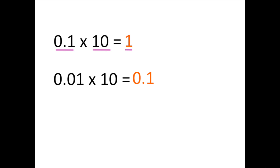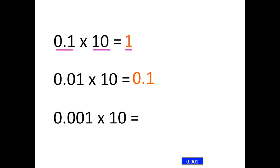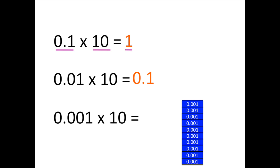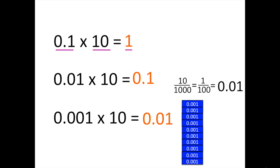Let's look at one last problem: 1 thousandth times 10, and again we'll look at a visual representation. I'm going to show you 10 one-thousandths. If we write that as a fraction and add them all up, we have 10 one-thousandths. We can simplify that to 1 hundredth, which we can write as a decimal as 0.01, also read as one hundredth. So 1 thousandth times 10 equals 1 hundredth.